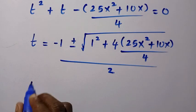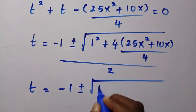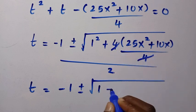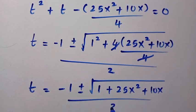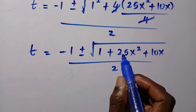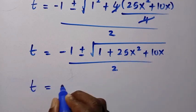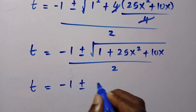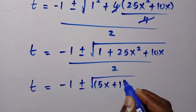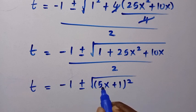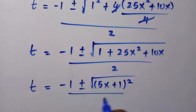So everything divided by 2. Then t equals minus 1 plus or minus the square root of 1 squared, that is 1. The 4 and 4 cancel, leaving plus 25x squared plus 10x, all divided by 2. Proceeding, we have 25x squared plus 10x plus 1, which equals minus 1 plus or minus the square root of 5x plus 1 squared, divided by 2.